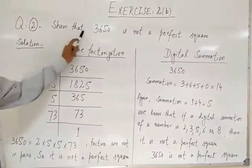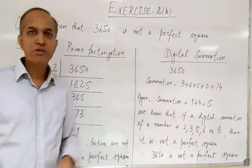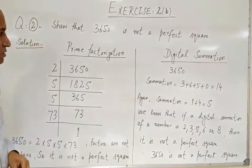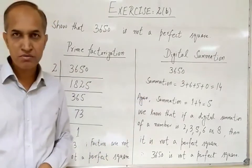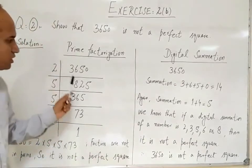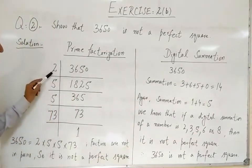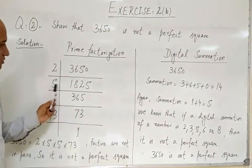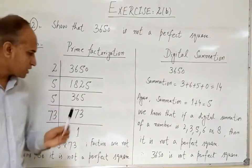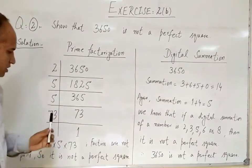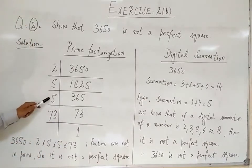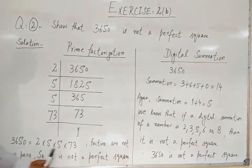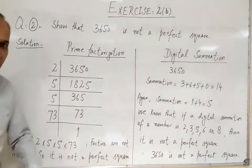In question number 2, we have to show that 3650 is not a perfect square. We solve this by two methods: prime factorization and digital summation. By prime factorization, we factorize 3650: dividing by 2 gives 1825, dividing by 5 gives 365, dividing by 5 again gives 73, and then 73 gives 1. So 3650 equals 2 × 5 × 5 × 73. The factors are not all in pairs — 2 and 73 have no pairs — so 3650 is not a perfect square.